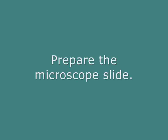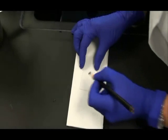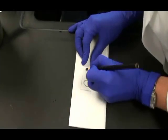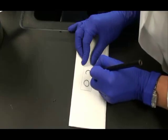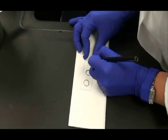First we need to prepare the microscope slide. For this stain we're going to have two controls and an unknown. So I need to draw three circles on the microscope slide using a wax pencil.